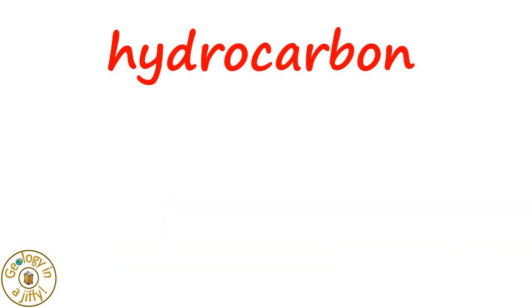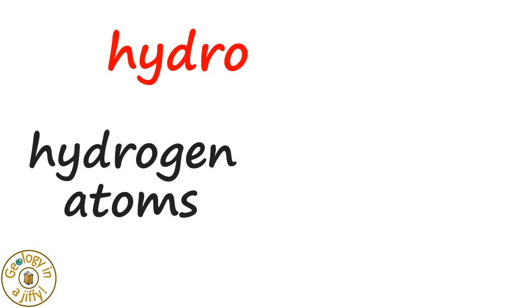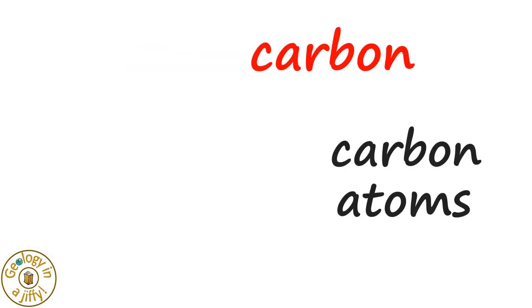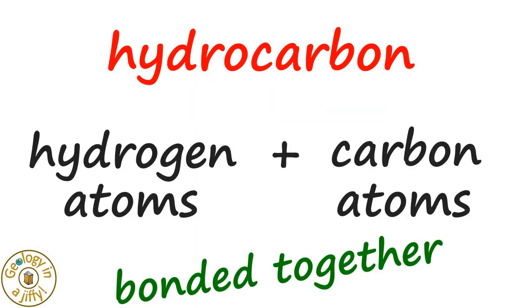Look at the word hydrocarbon. If we cut the word up, we can make two words: hydro and carbon. Hydro refers to the hydrogen atoms, carbon refers to the carbon atoms. So a hydrocarbon is a compound made up of hydrogen atoms and carbon atoms that are bonded together.